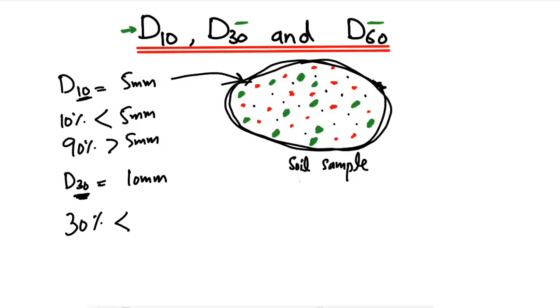30 percent of the material, of the particle size of this soil sample, is lower than 10 millimeters, while 70% of the soil sample particle size is greater than 10 millimeters.